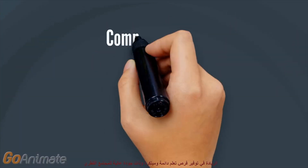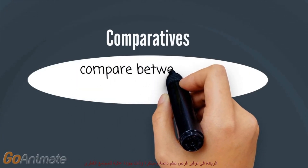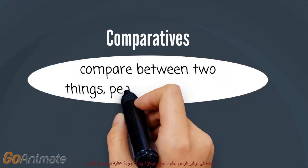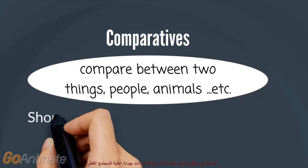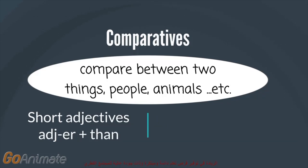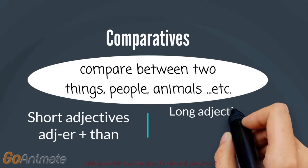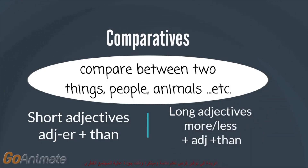In comparative sentences, you compare between two things — two people, two animals, syllables, or any two objects — using adjectives. You could do that by simply adding -ER to the short adjective, plus 'than.' However, in case the adjective is long or has two or more syllables, you need to add 'more' or 'less' before the adjective, plus 'than.'